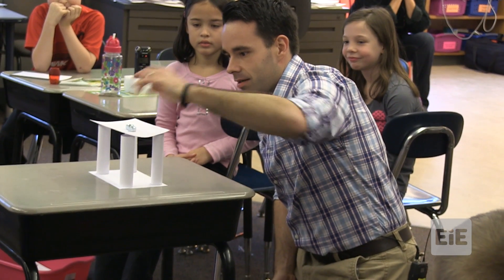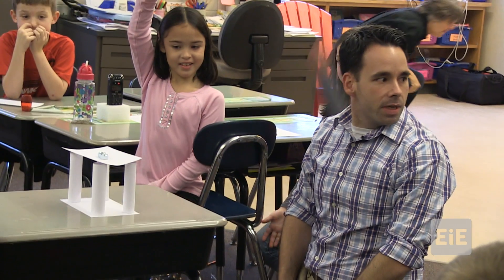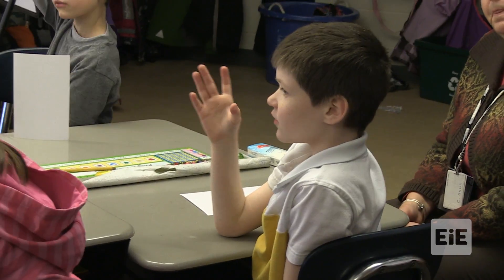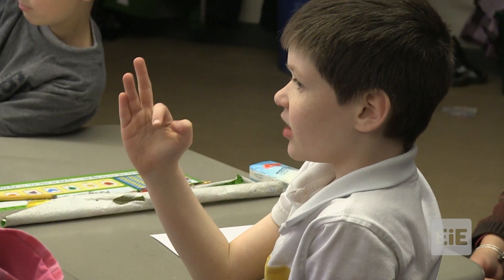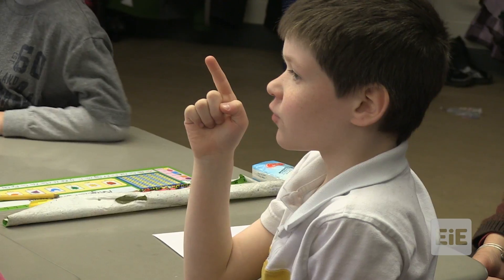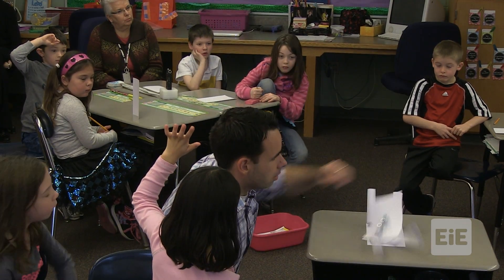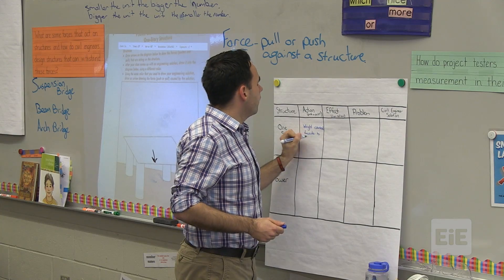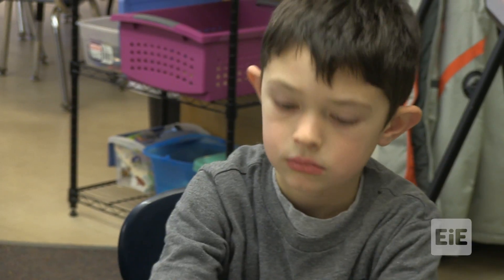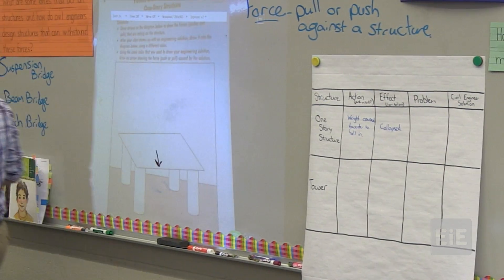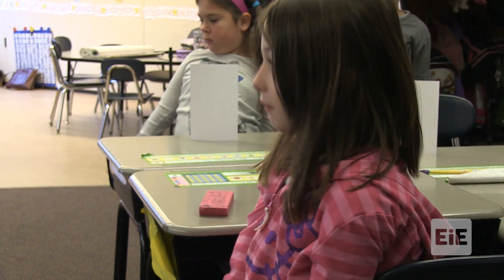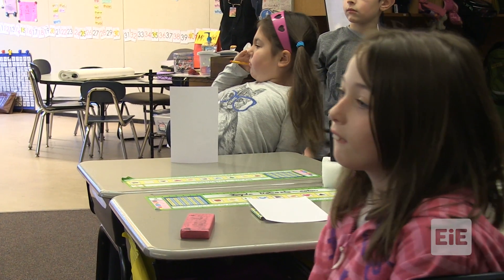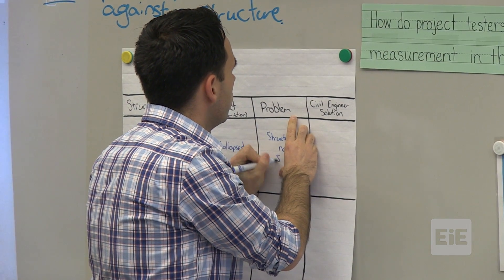The middle is falling because there's nothing to support it to stay up. We noticed that weight caused the center to fall in. So what's the problem we have to fix as civil engineers? Maybe we should make it stronger — our structure is not strong.